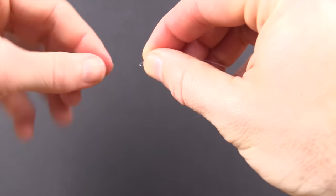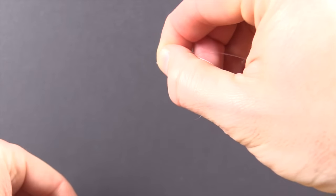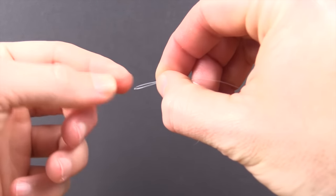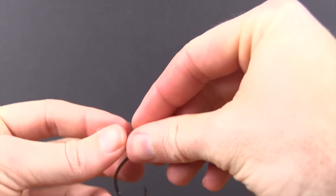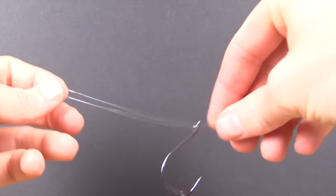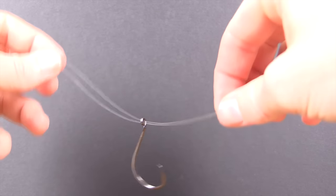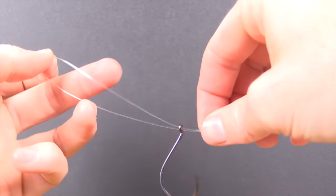At the end of this loop, we need to pinch it down because we need to thread this through the eye of the hook. I'll get it nice and small so it'll fit through the hook. Now we have a hook floating on this doubled over line.